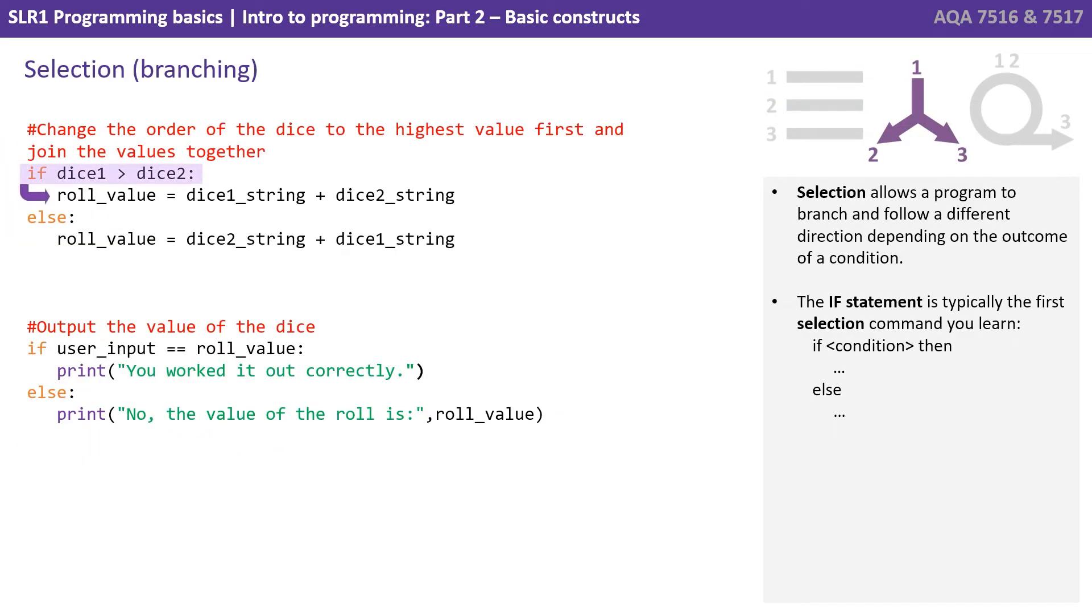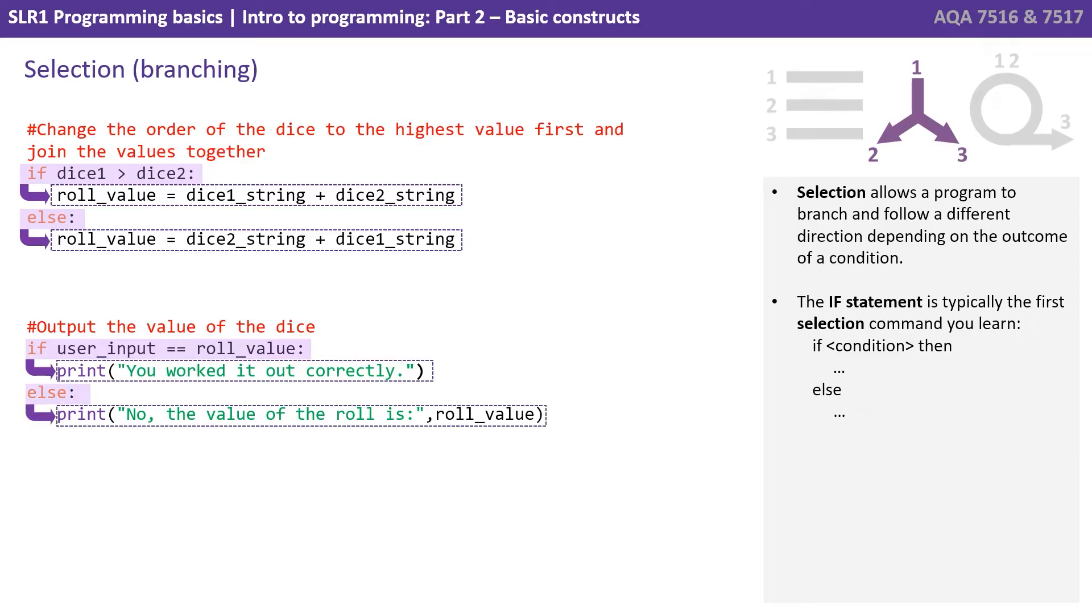Selection allows a program to branch and follow a different direction depending on the outcome of a condition. The if statement is typically the first selection command you learn. If a certain condition is true, then execute this particular line of code; otherwise, or else, execute this other line of code. We can see two examples here on the screen.